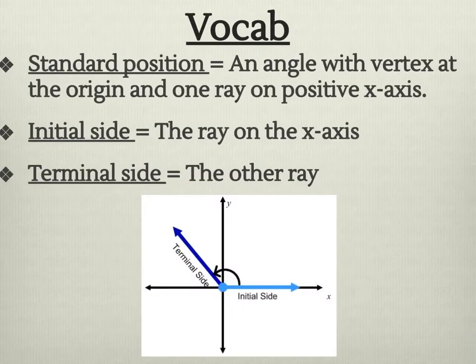Here's some vocabulary. When we draw an angle, we always make sure we put the initial side on the positive x-axis. That's the initial side. Then we open it up and we draw to the terminal side. The terminal side is the one that can move around. So this angle is in standard position because it has a vertex at the origin and one ray on the positive x-axis.